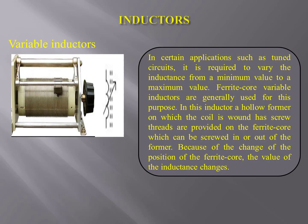Variable inductors — you can see the figure and its symbol on the screen. In certain applications such as tuned circuits, it is required to vary the inductance from a minimum value to a maximum value. Ferrite core variable inductors are generally used for this purpose. In this inductor, a hollow former on which the coil is wound has screwed threads provided on the ferrite core, which can be screwed in or out of the former. Because of the change in position of the ferrite core, the value of the inductance changes.